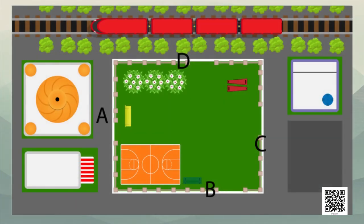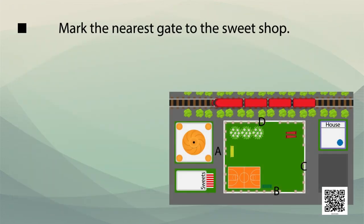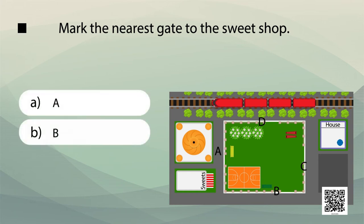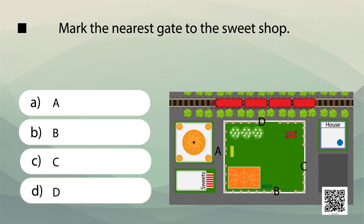Now here is a picture of the park at the back of Gapu's house. Look at this picture and answer a few questions. The first question is: mark the gate nearest to the sweet shop. Which gate is closest to the sweet shop — A, B, C, or D?